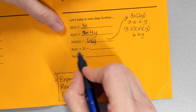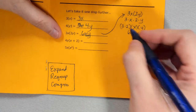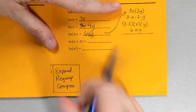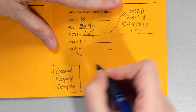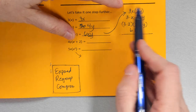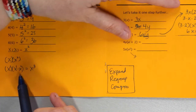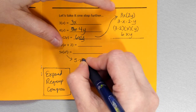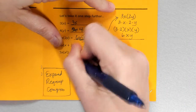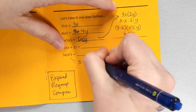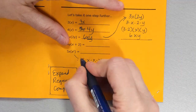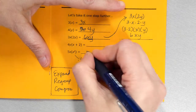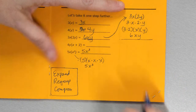Let's look at this next one. We have 5x to the third. Expanding: I take out the parentheses and write 5 times x times x times x. There's the expansion. Now I compress it back together: 5 times x to the third.